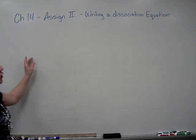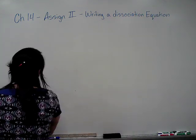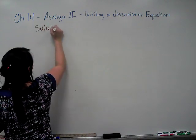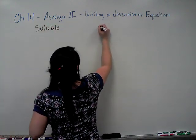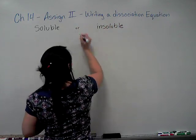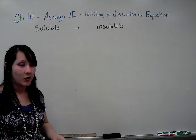Chapter 14 assignment 2 is writing a dissociation equation. After you have identified a substance as soluble or insoluble, then you may or may not be able to write a dissociation equation.